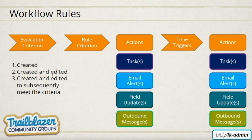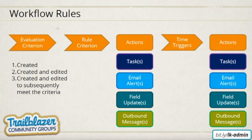There are options like 'created and edited' and 'created and edited to subsequently meet the criteria.' The 'created and edited' option means whatever criteria you mentioned — let's say the criteria is opportunity amount equals 1000 — whenever the record is edited and if the system finds the opportunity amount is 1000, it will run the actions. Whereas the third option, 'created and edited to meet the criteria,' means the criteria was not being met before the edit was made.